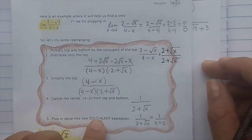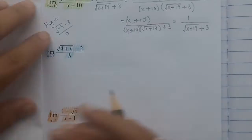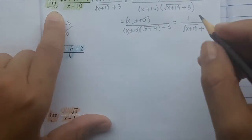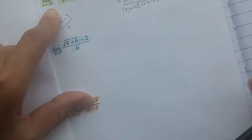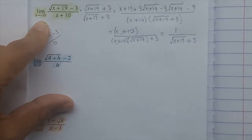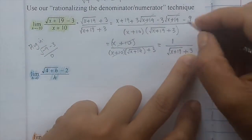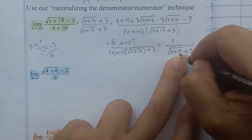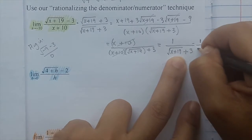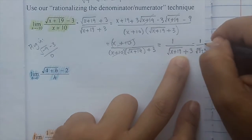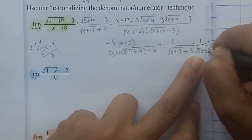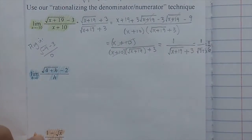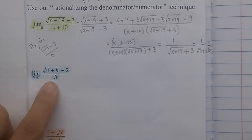Now plug in the value. It's the limit as x approaches negative 10, so put negative 10 wherever you see x. Negative 10 plus 19 is positive 9, and the square root of 9 is 3. So you get 1 over (3 plus 3), which is 1 over 6. The limit as x approaches negative 10 is 1 over 6.